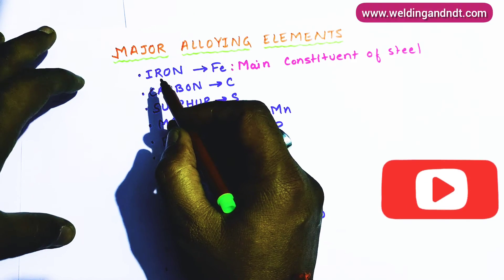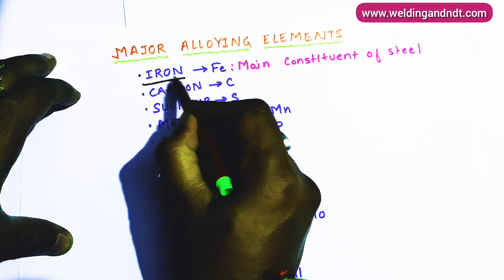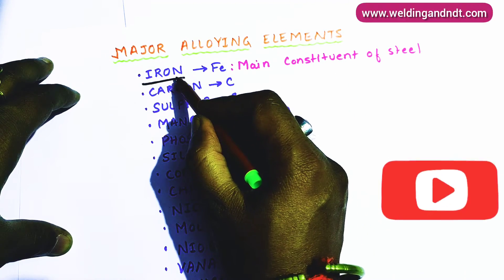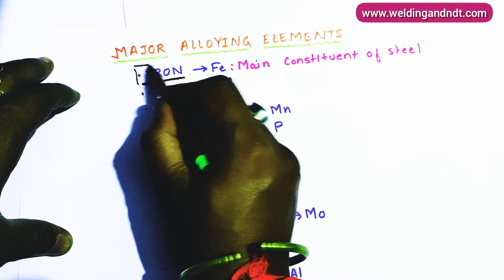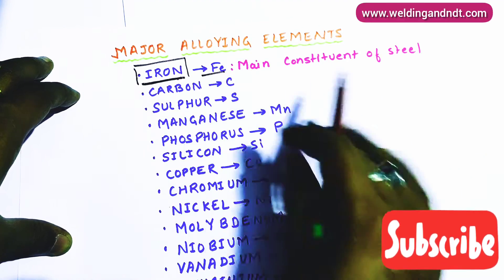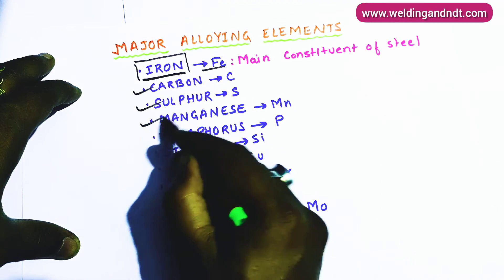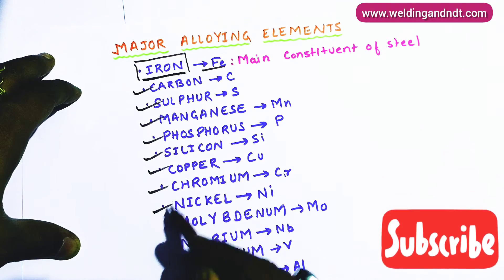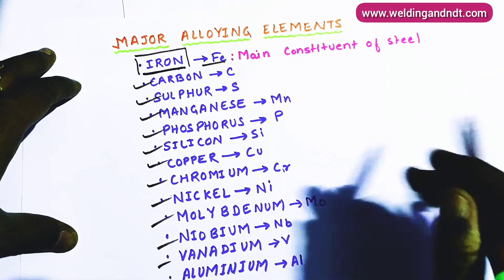The main constituent of steel is iron. Iron is not an alloying element; rather, iron is the main constituent of steel. The alloying elements are carbon, sulfur, manganese, phosphorus, silicon, copper, chromium, nickel, molybdenum, niobium, vanadium, and aluminium.